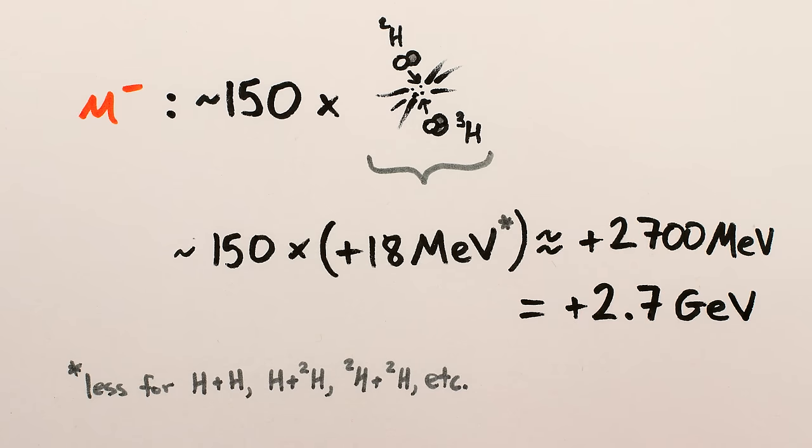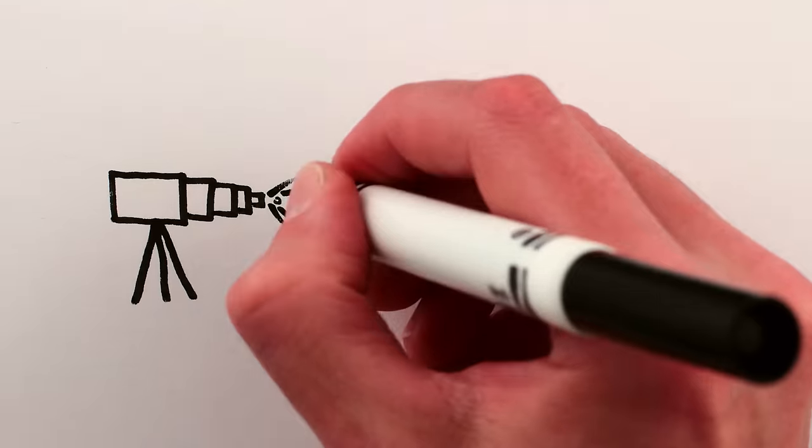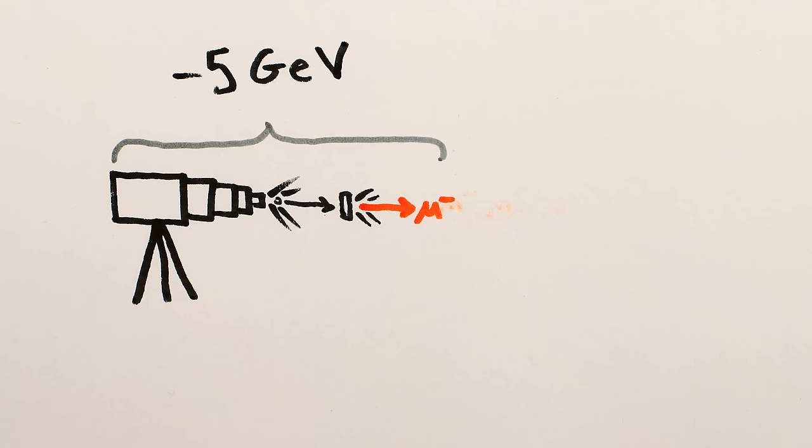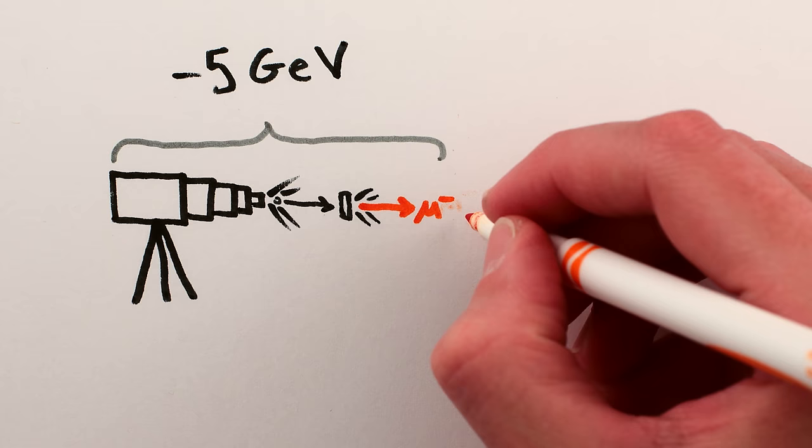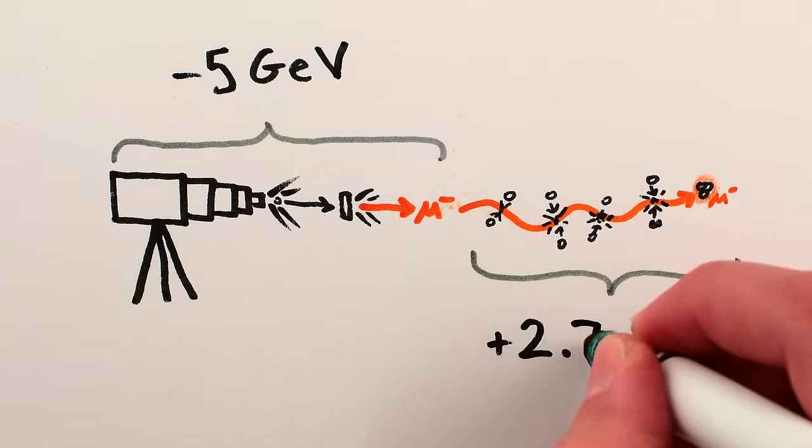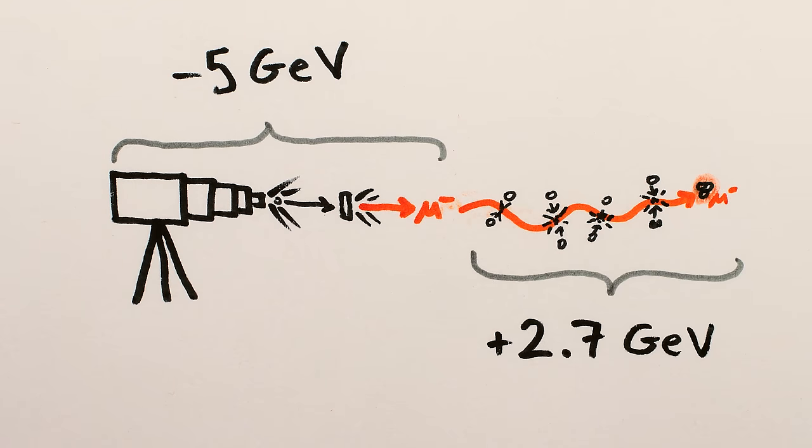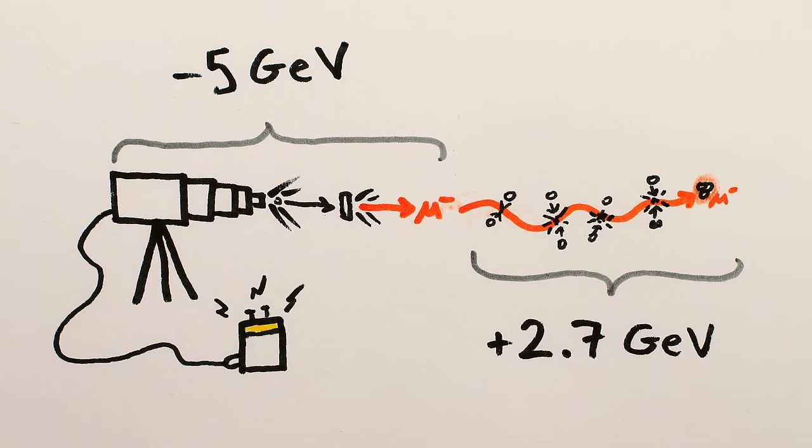Which means that unfortunately, the numbers don't add up. Remember, it currently takes around 5 giga electron volts of energy to produce a muon, but each muon only generates about 2.5 giga electron volts of energy before getting stuck to a nucleus. That is, muon facilitated fusion is a net consumer of energy, rather than being a source of energy.